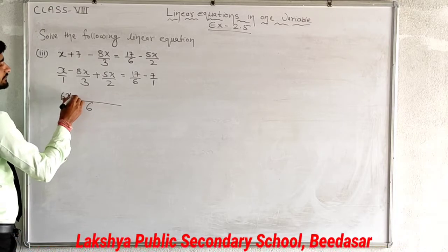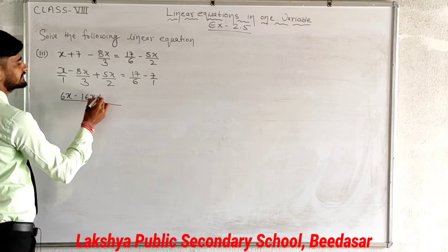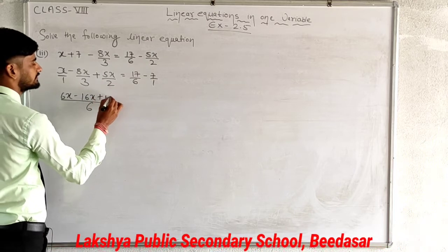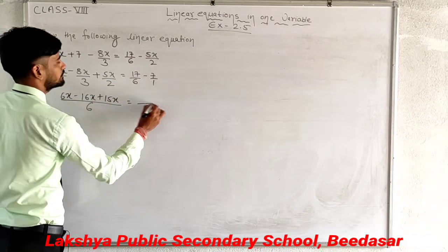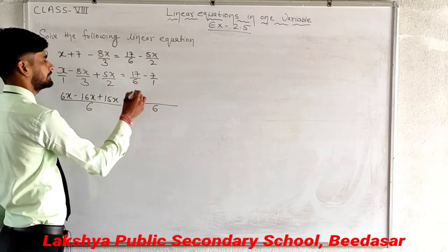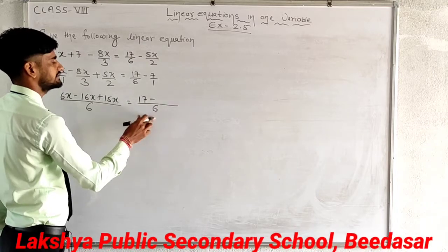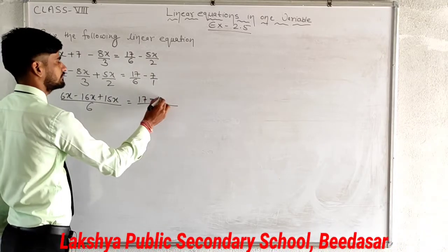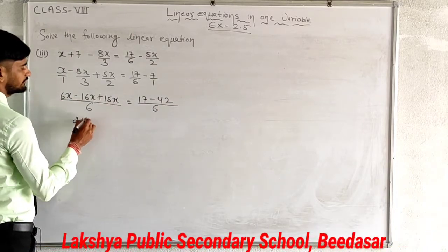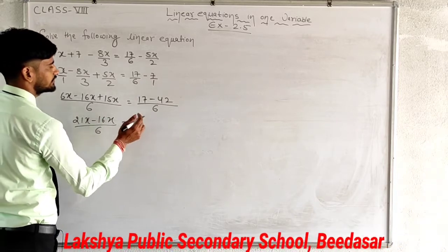6x minus 6 divided by 3 is 2, multiply 8x giving 16x, plus 6 divided by 2 is 3, multiply 5x giving 15x. On the right, LCM of 6 and 1 is 6: 6 divided by 6 is 1, multiply 17 gives 17; minus 6 divided by 1 is 6, multiply 7 gives 42. Combining: 6x plus 15x minus 16x upon 6 equals 17 minus 42 upon 6.